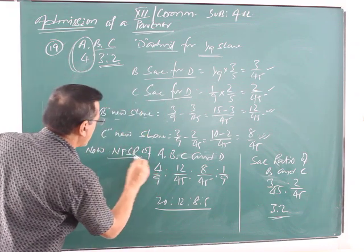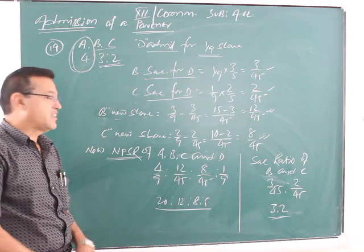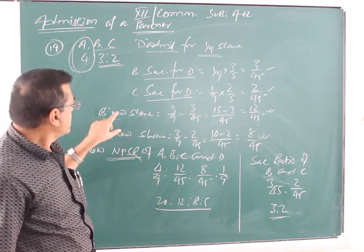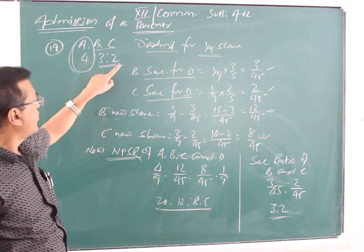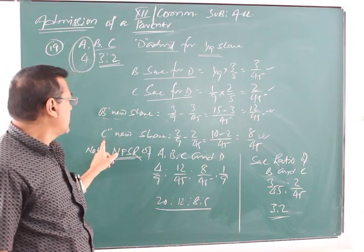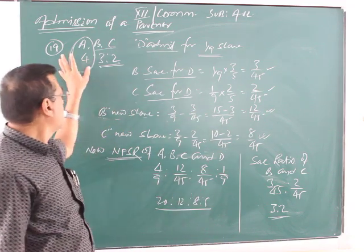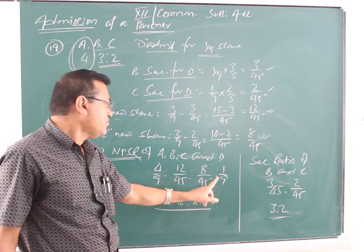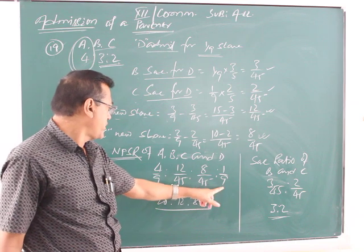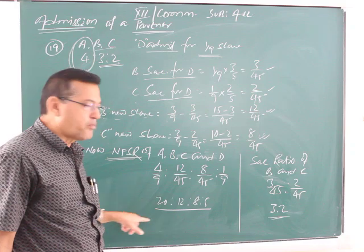So, NPSR, new profit-sharing ratio A, B, C, and D: A retains his original share, 4/9. B's share after sacrificing to the interest of new partner D will come 12/45, and C's share after sacrificing will come 8/45, and D's share remains the same, 1/9. Taking LCM 45, it will be 20, 12, 8, and 5. This is the new profit-sharing ratio.